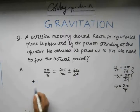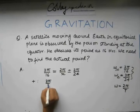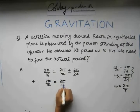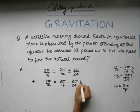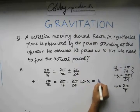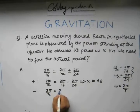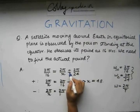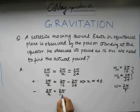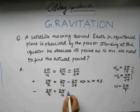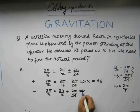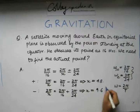Solving for the plus sign first, we get 2π/x equals 2π/16 minus 2π/24, which gives x equals 48 hours. Solving for the minus sign, 2π/x equals 2π/16 plus 2π/24, which gives x equals 9.6 hours. Both are in hours.